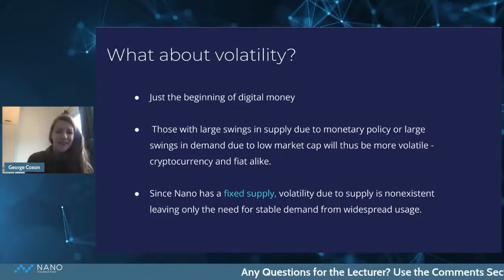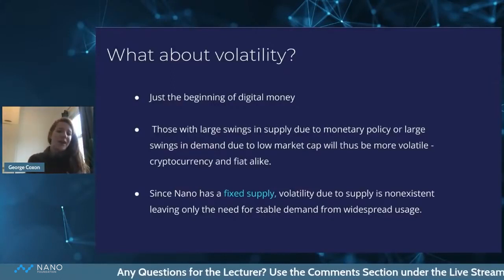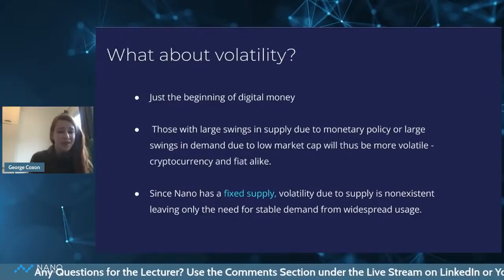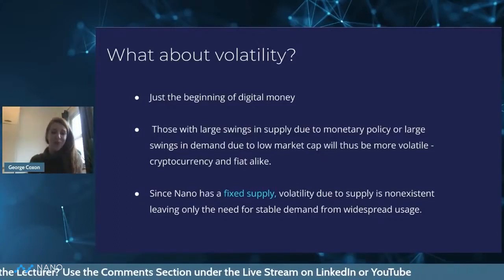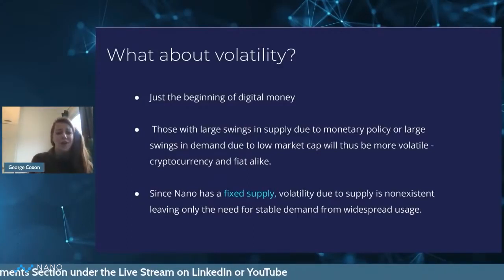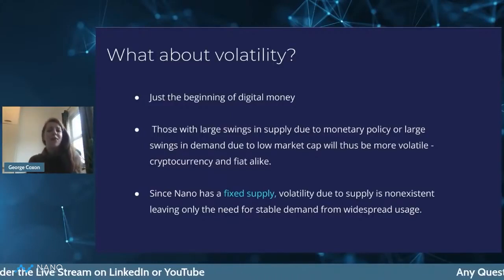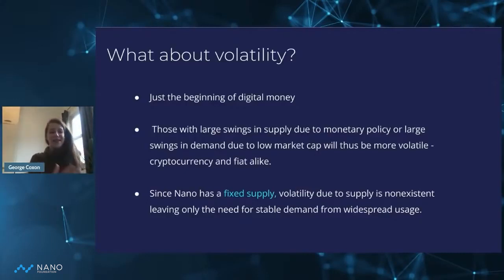Large swings in supply due to monetary policy — as we were saying earlier, with 40% of all dollars having been printed — or large swings in demand due to low market cap will result in more volatility. That applies to both cryptocurrencies and fiat alike. Volatility is not just an issue that cryptocurrencies face; fiat currencies are incredibly volatile too.